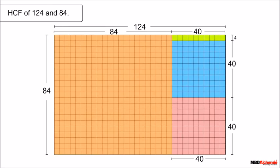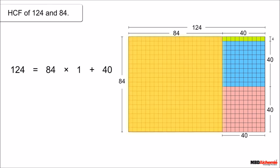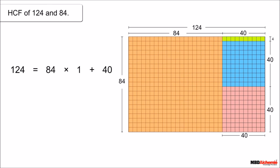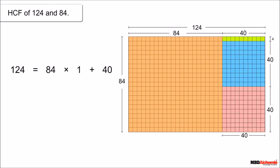In this remainder, ten squares of size 4 × 4 can be drawn, and this time no remainder is left. The 4 × 4 square can be fitted in all the previously made squares. Comparing: first, 124 is divided by 84 with remainder 40 — we drew a square of 84 × 84, meaning 84 is taken out of 124, and the remaining rectangle of 84 × 40 is the remainder. Here the previous divisor becomes the new dividend and the previous remainder becomes the new divisor.